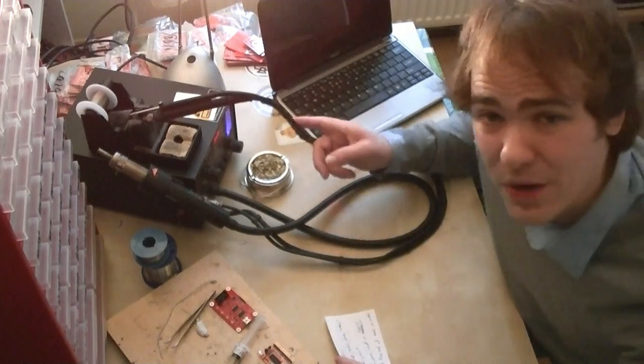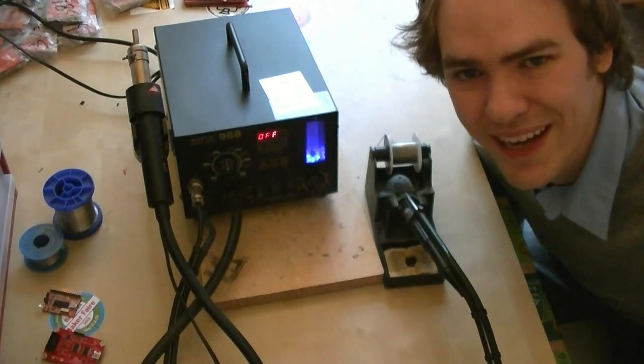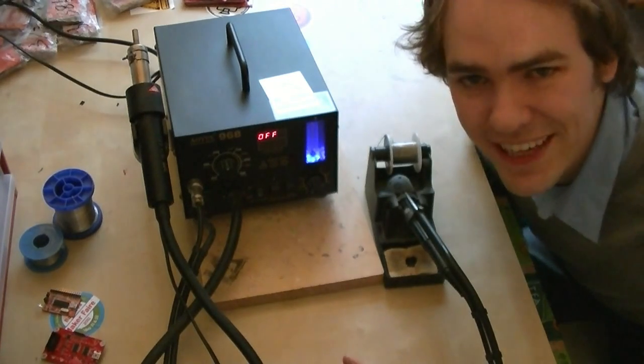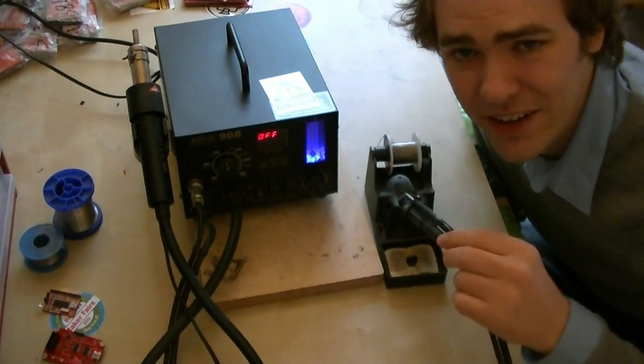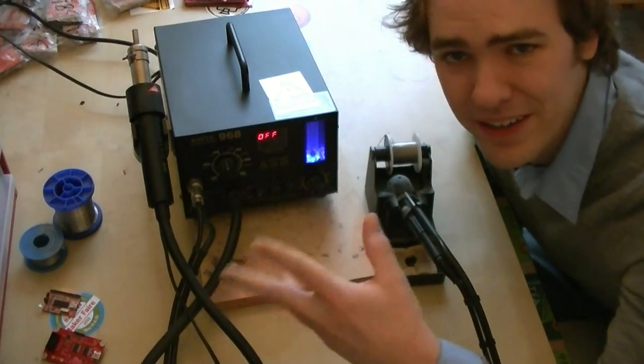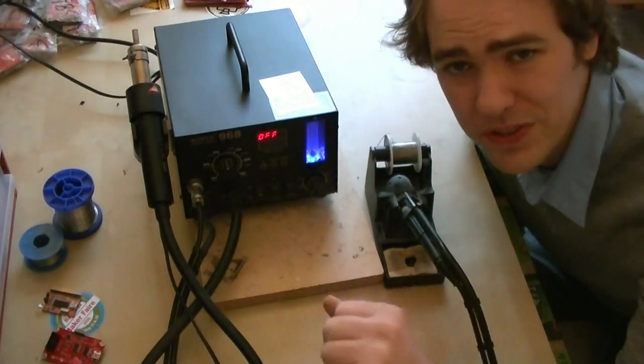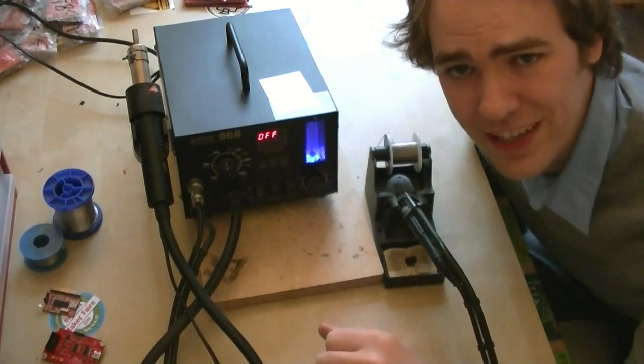Now, last up, we're going to talk about the IOA soldering station. This is our IOA 968 rework station. It's got three features. It's got a soldering iron with adjustable temperature, a hot air tool that blows hot air at different temperatures, and the third feature is a fume extractor, so it sucks up the smoke when you solder, so the fumes don't get up into your face.